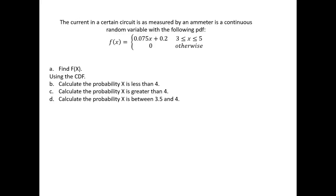Suppose the current in a certain circuit, as measured by an ammeter, is a continuous random variable with the following PDF. So f of x is equal to 0.075x plus 0.2, where x is between 3 and 5.